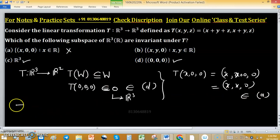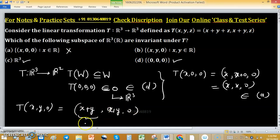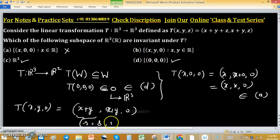But T of x, y, 0, we are checking option B. So it will be x plus y and x plus y comma 0. If we take x plus y as S, so it will be S comma S comma 0 belongs to option B, where S belongs to R. So option B is also T invariant.